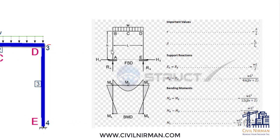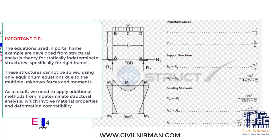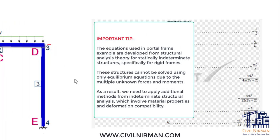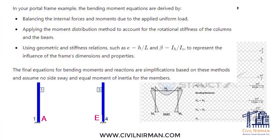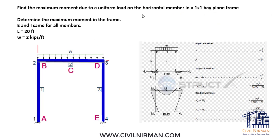You might have observed these particular equations used to quickly get values for simple frames and beams. We will validate this frame using these equations — you can see the same notations provided here. The bending moment diagram shows that since it is fixed at the bottom and loaded with a UDL, you get a diagram with positive and negative moments. Since the members are one-by-one with the same E and I values, you can work out moment of inertia, section modulus, and area easily.